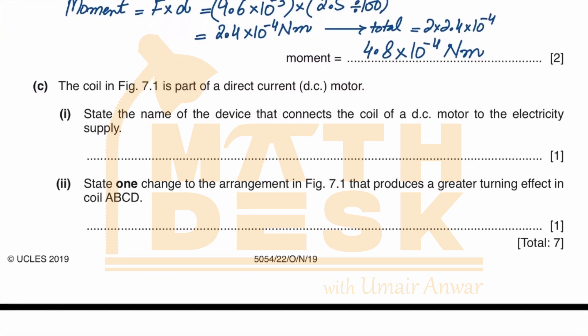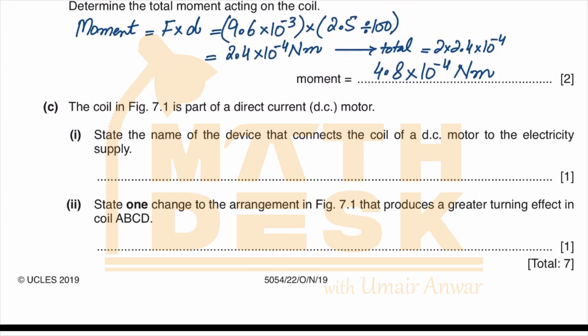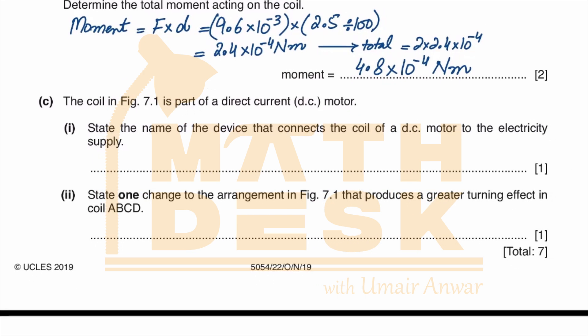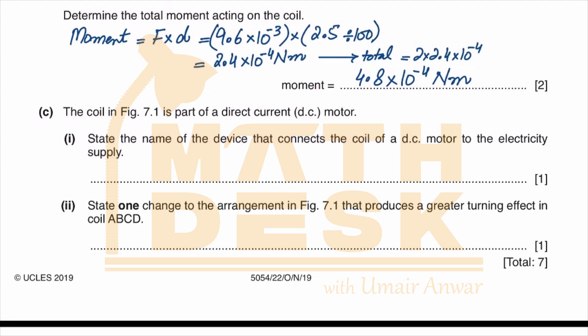The coil in figure 7.1 is part of a direct current DC motor. State the name of the device that connects the coil of a DC motor to electricity supply. The coil is directly connected to the split ring commutator, which through the brushes connects it with the electricity supply.